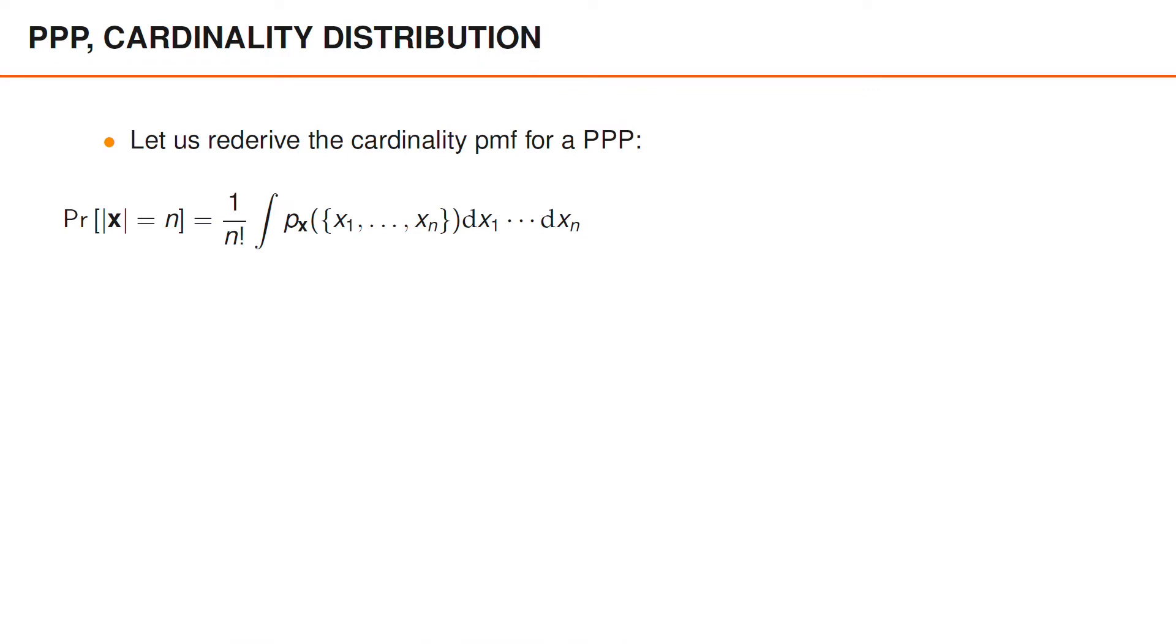In the previous video, we learned how to derive the cardinality PMF of a random finite set and used it to derive the cardinality PMF in a trivial example. Now that we are given the multi-object PDF of a Poisson point process, we can use it to derive its cardinality PMF.